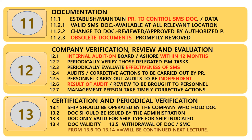Chapter 11: Documentation. Section 11.1: Establish and maintain a procedure to control safety management system documents and data. Section 11.2.1: Valid SMS documents to be available at all relevant locations. Section 11.2.2: Changes to documents to be reviewed and approved by authorized personnel. Section 11.2.3: Obsolete documents should be promptly removed.